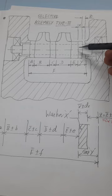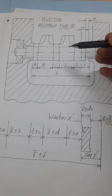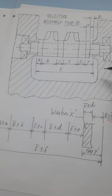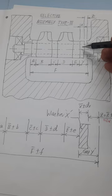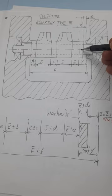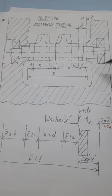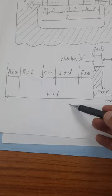The last part, washer X alone, is going to be selectively chosen. When you use the selective assembly Type 3, all the parts of the assembly are made as interchangeable parts except for the last part. Here, washer X is the last part which is going to be selectively chosen. This assembly with the involved dimensions is shown in simplified form here.